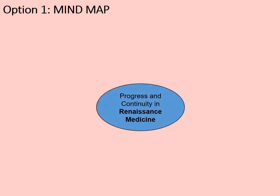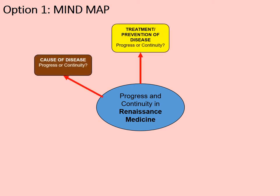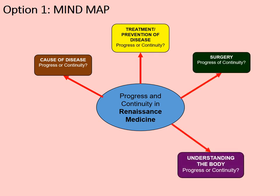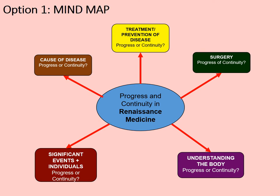Option one is a mind map. Your title in the middle should be 'progress and continuity in Renaissance medicine.' You can have sections on cause of disease, treatment and prevention, surgery, understanding the body, and significant events and individuals. Give each section its own dedicated colour. Having wavy branches rather than straight lines allows you to be more free in the shapes you draw, and it's a good idea to double-encode this with basic illustrations — it helps embed information into your long-term memory.